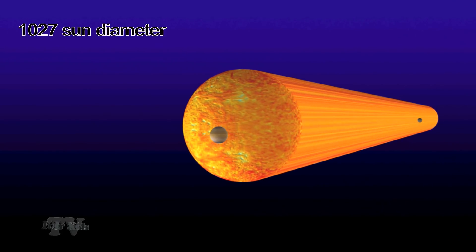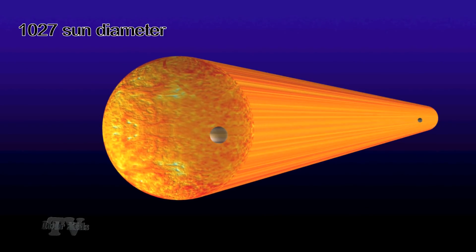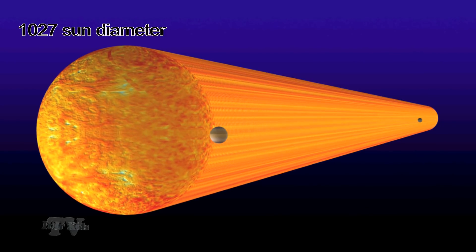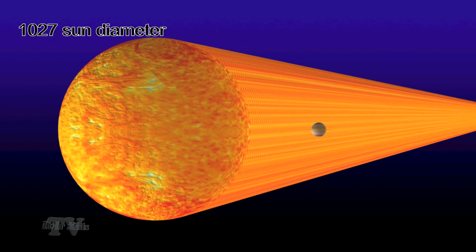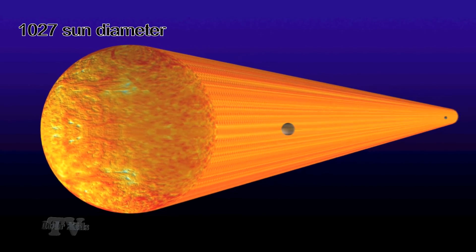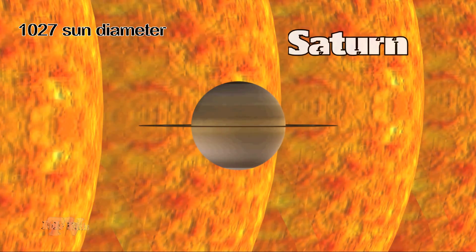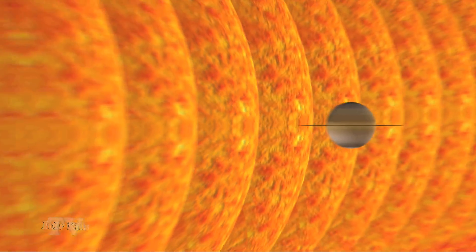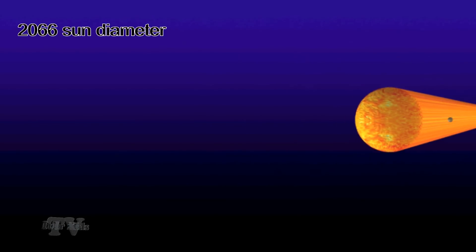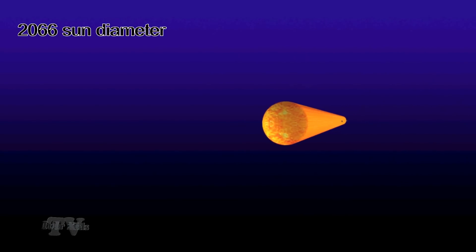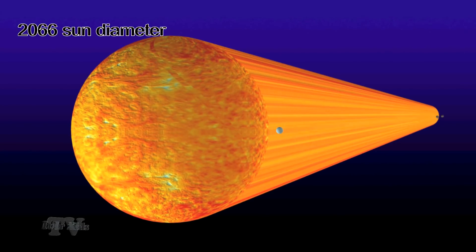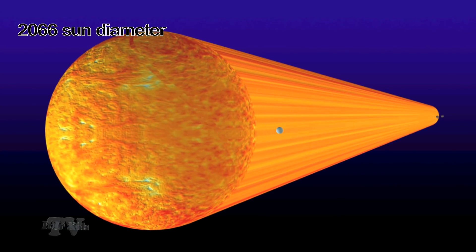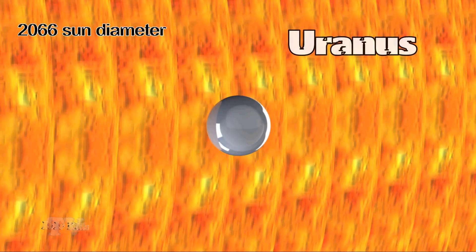The distance from the Sun to Saturn is 1027 diameters of the Sun. Uranus.